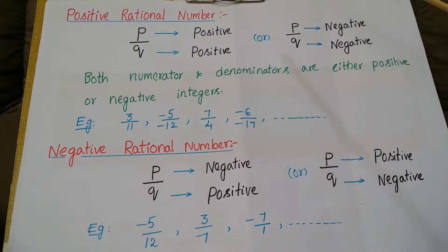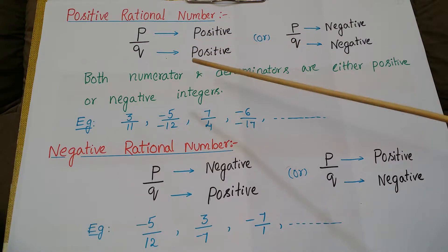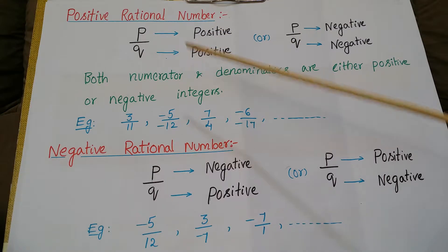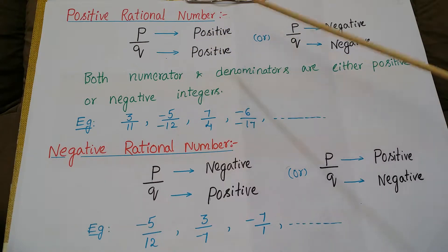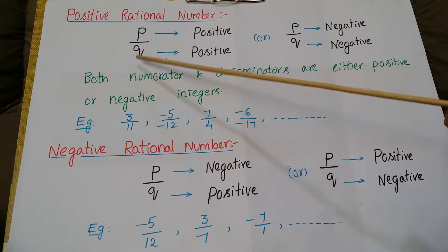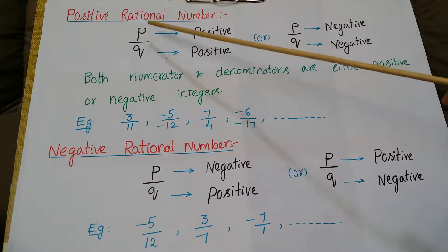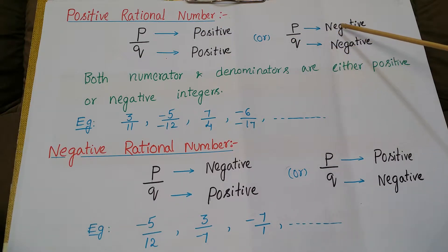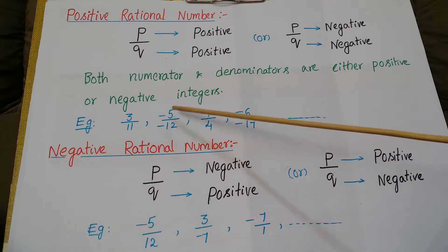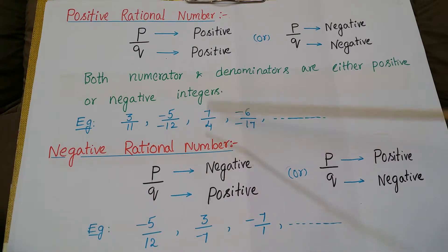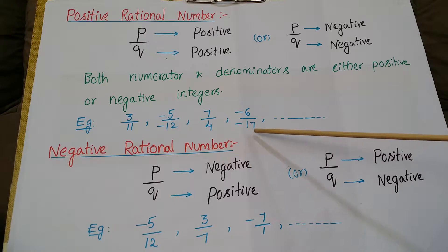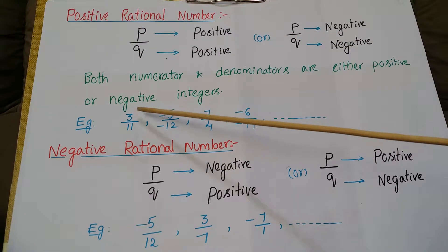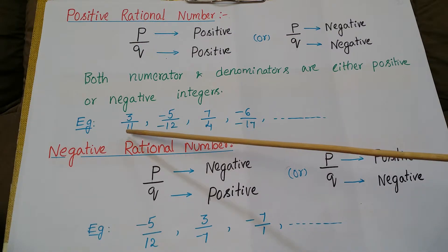Now I am going to tell about positive rational numbers. Positive rational numbers are the rational numbers where numerator and denominator are either both positive or both negative integers. See here: P by Q is a rational number. See these examples: 3 by 11, minus 5 by minus 12, 7 by 4, minus 6 by minus 17.